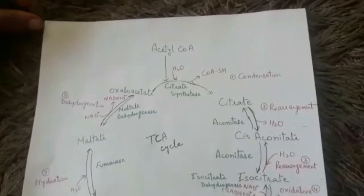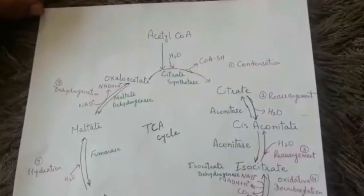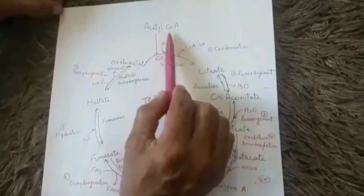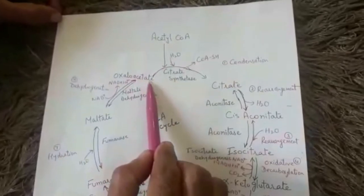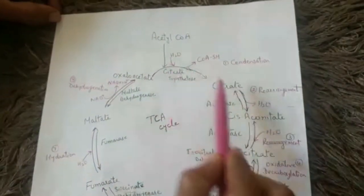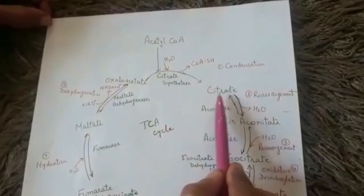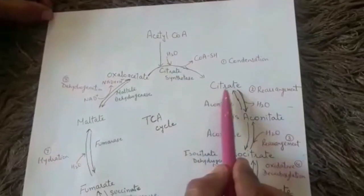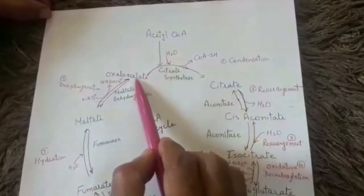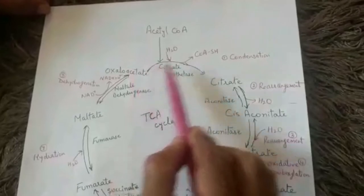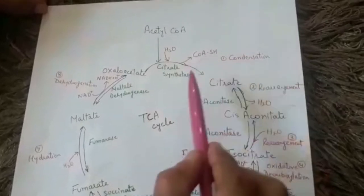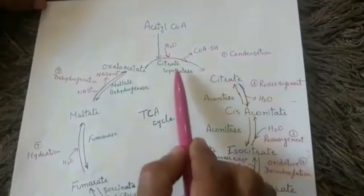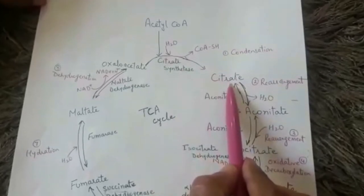In continuation with the first video, we will study the Krebs cycle. This cycle is completed in eight steps. The first step is condensation: acetyl coenzyme A condenses with oxaloacetate in the presence of a water molecule to form citric acid or citrate. Coenzyme A is released in this step. The enzyme is citrate synthetase, because this step involves synthesis of citrate.